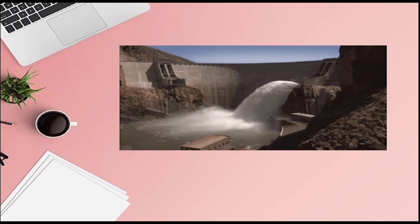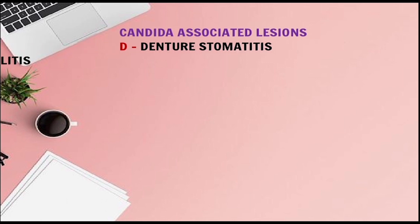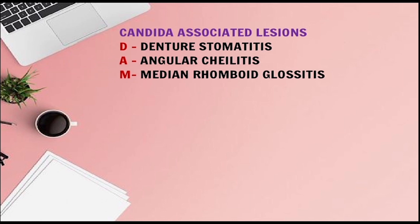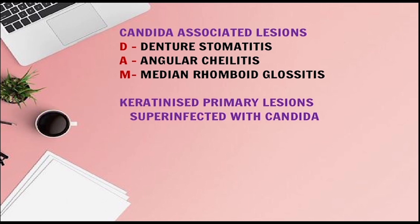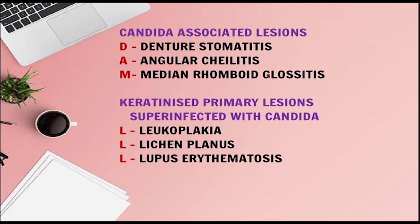They were sitting on a DAM — that represents Candida-associated lesions. D for Denture Stomatitis, A for Angular Cheilitis, M for Median Rhomboid Glossitis. Additionally, keratinized primary lesions superinfected with Candida — three L's: L for Leukoplakia, L for Lichen Planus, L for Lupus Erythematosus.